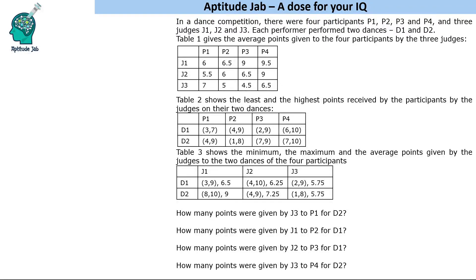Hello everyone, welcome to Aptitude Jab. This is a logical DI set. It says that in a dance competition there are four participants: P1, P2, P3, and P4, and there are three judges: J1, J2, and J3.